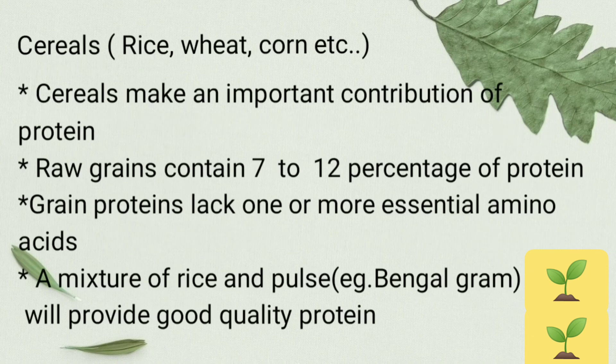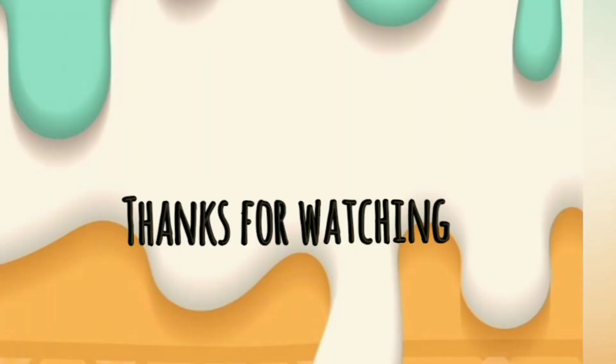Cereals — meaning rice, wheat, corn, etc. — make an important contribution to protein. Raw grains contain about 7 to 12 percent protein, but they lack one or more essential amino acids. Hence, it is better to take a mixture of rice and pulses to get good quality protein.